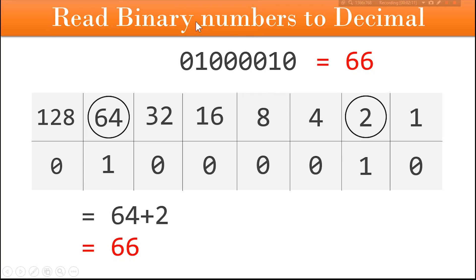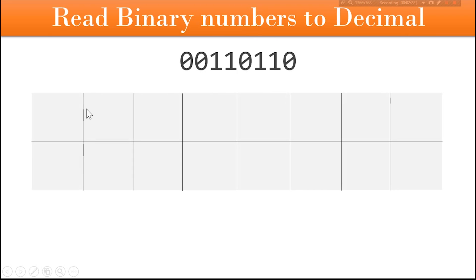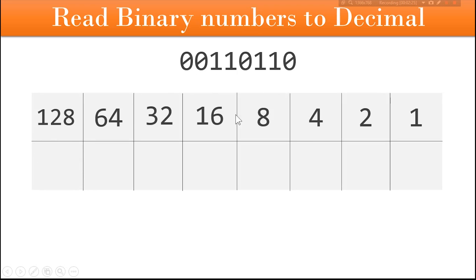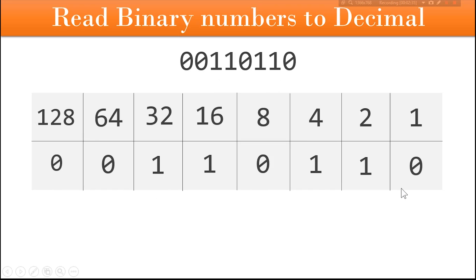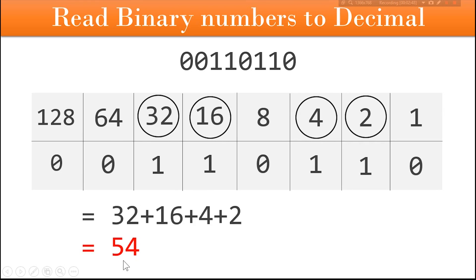It's that simple to convert from binary to decimal. Now let's look at another example with a different binary number. Make a table of two rows and eight columns, write the index values — these are static and never change. Fill in the binary number into the second row, circle the numbers above every 1, then add up all the circled numbers, which adds up to 54 in this example. So that binary number refers to 54 in decimal.